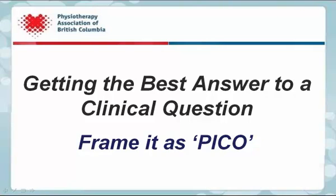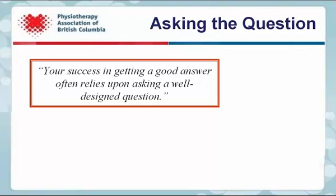This PABC tutorial on getting the best answer to a clinical question will introduce you to how to phrase a clinical question in the way that will get you the best evidence. It will involve phrasing the question to include information about the patients, interventions, controls, and outcomes desired as necessary. Your success in getting a good answer often relies upon asking a well-designed question. The first step in searching is to properly ask the question.